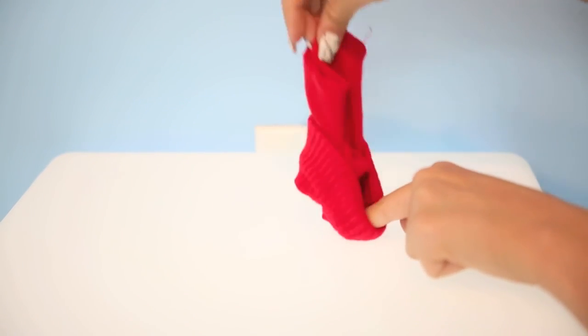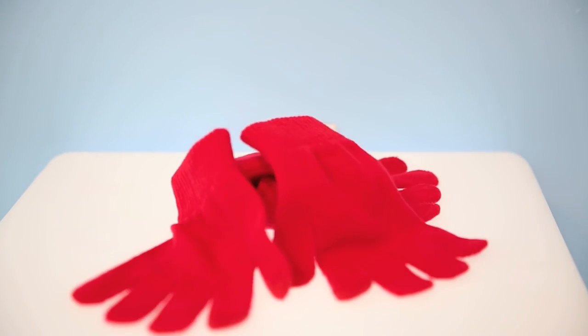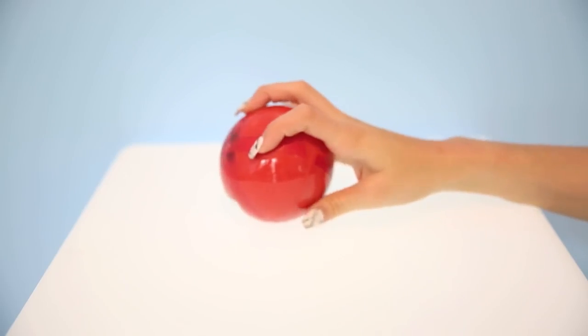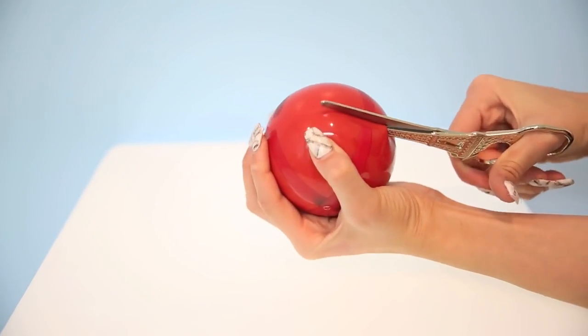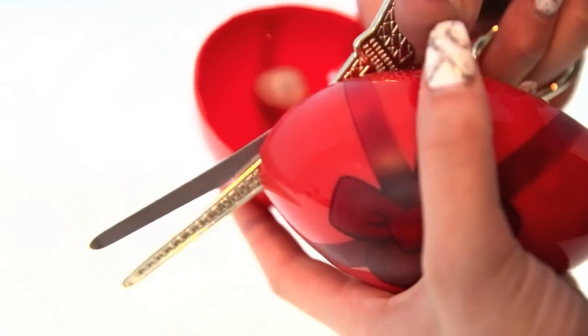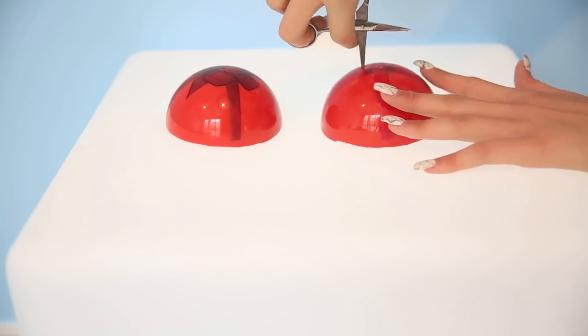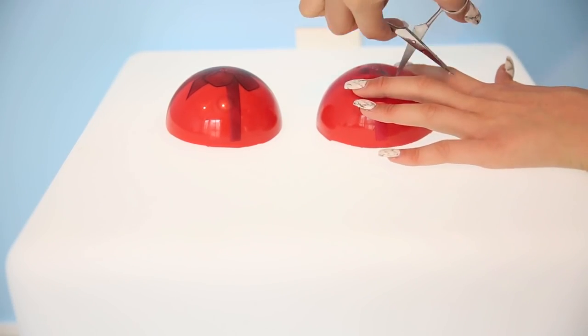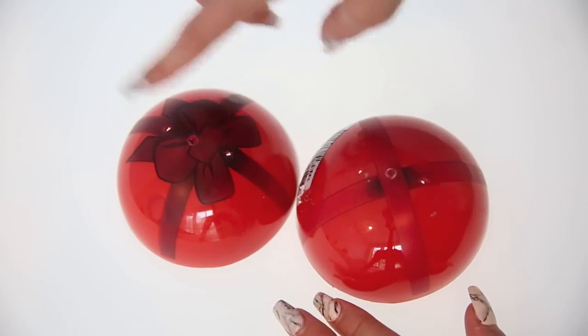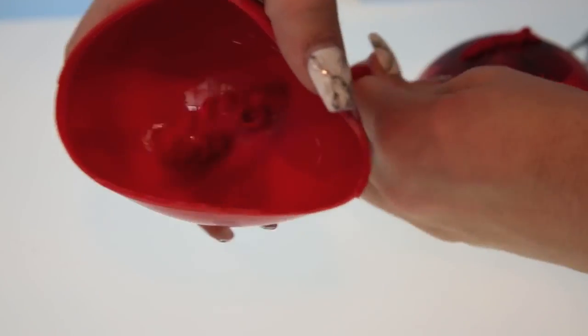First you need a glove or two or three or four, and then a hollowed out ball of some sort. Cut that ball in half, poke two holes in the center of the ball, then stick some yarn through those holes.